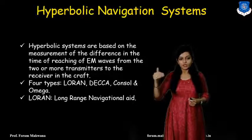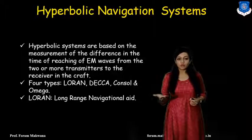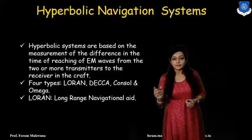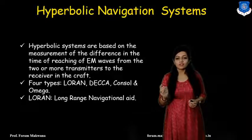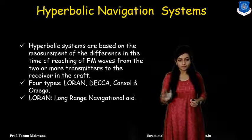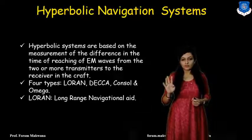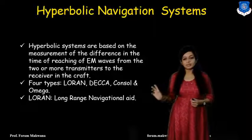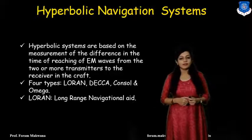As there are two or more transmitters on the ground and a receiver, we are going to calculate and measure the difference in the time of reaching of the EM waves. There are four types of hyperbolic navigation systems: LORAN, DECA, CONSOR, and OMDECA. But as per the syllabus, we need to only study two hyperbolic systems — that is LORAN and DECA.